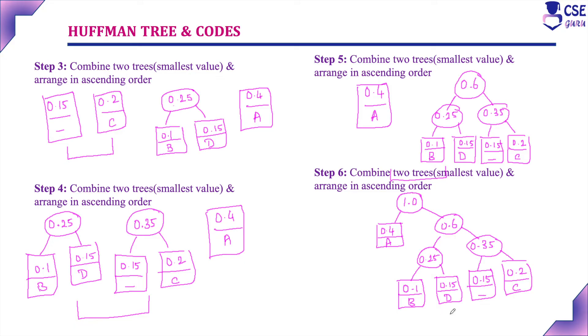Finally, combine the remaining two: 0.4 (A) and the 0.6 tree to get 1.0 at the root. The left child is 0.4 (A) and the right child is the 0.6 subtree. This gives us a single tree, which is the Huffman tree. This procedure of combining the two smallest value nodes continues until a single tree is obtained.